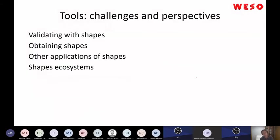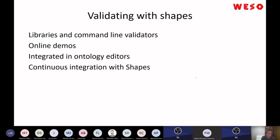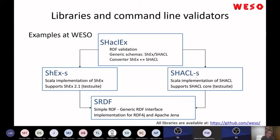Now let's go to the next topic: challenges and perspectives. I divided this topic into four parts: validating with SHACL, obtaining SHACL shapes, other applications of shapes beyond validation, and shape ecosystems. About validating with shapes — there are different ways: libraries, command-line validators, and online demos. This is a very personal point of view, as these are the libraries we are developing at my research group.